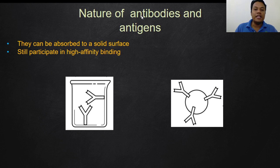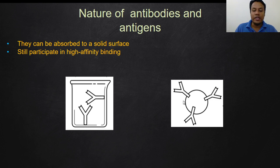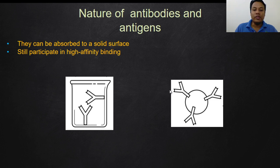EIA also applies the principle that antibodies and antigens can be absorbed onto a solid surface — for example, a plastic microwell or a plastic microbead. Even though the antigen or antibody is stuck to the solid surface, they still retain their high affinity binding. That means the strength of interaction between antigen and antibody is preserved, so we can use this property.